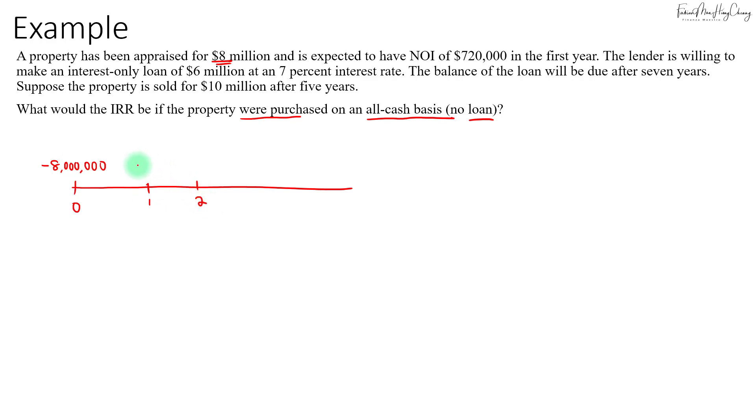From year one through year five, the investor will receive all the NOI, so you will get $720,000 every year for up to five years. At the end of five years you will sell the property for $10 million, and that is all accrued to the investor.